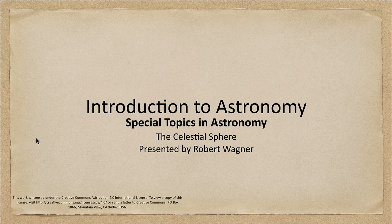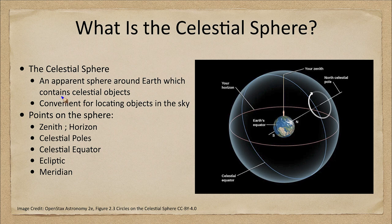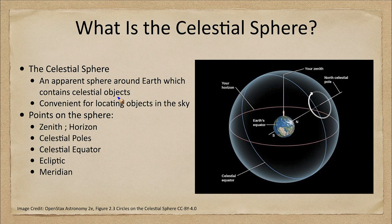So what is the celestial sphere? The celestial sphere is an apparent sphere around Earth which contains the celestial objects. It is a geocentric construction, meaning Earth is at the center and we see everything in the sky attached to this great celestial sphere, moving around it. It looks like the celestial sphere rotates, causing objects to rise in the east and set in the west, whereas in reality it is the Earth doing the rotating.